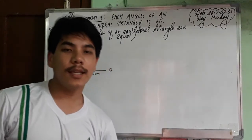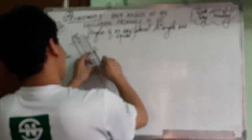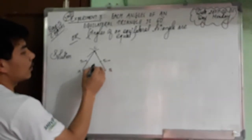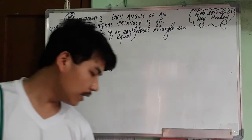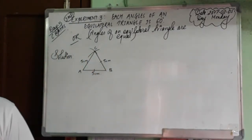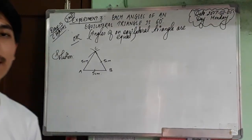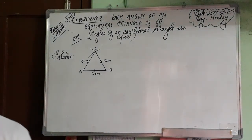Now draw arcs from A to C and B to C. We get a triangle. This side is 5cm, this automatically becomes 5cm, so all sides are equal. Since all 3 sides are equal, this triangle is called an equilateral triangle. Similarly, make 2 more equilateral triangles with different measurements, same like this.